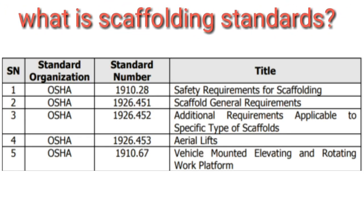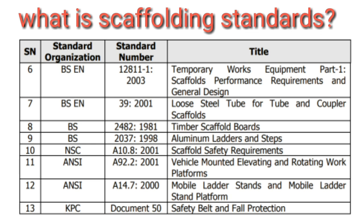What are scaffolding standards? 1. OSHA 1910.28 Safety Requirements for Scaffolding. 2. OSHA 1926.451 Scaffold General Requirements. 3. OSHA 1926.452 Additional Requirements Applicable to Specific Types of Scaffolds. 4. OSHA 1926.453 Aerial Lifts. 5. OSHA 1910.67 Vehicle Mounted Elevating and Rotating Work Platforms. 6. BSN 12811-1: